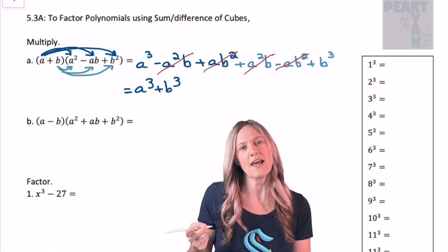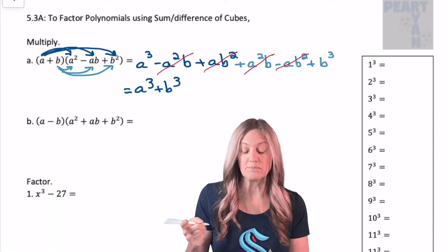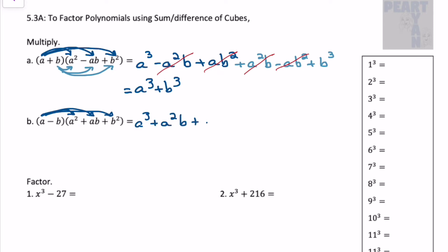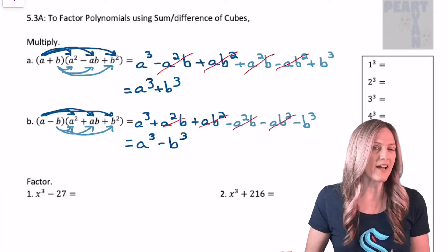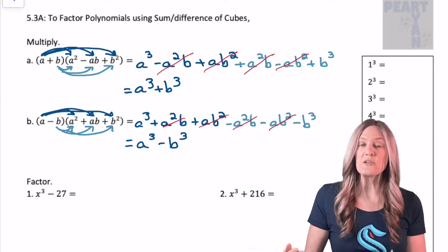a cubed plus b cubed. What do you think's gonna happen on the next one? Let's see. You probably had a good guess on this one. Now it's a cubed minus b cubed.